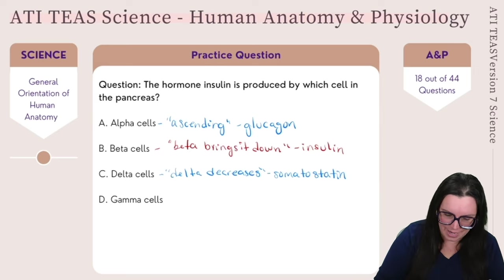Our next question: the filtration unit of a kidney, known as the nephron, does not include which of the following structures? Is it A — Bowman's capsule, B — loop of Henle, C — glomerulus, or D — gallbladder? This is a process of elimination question. Does Bowman's capsule exist within the urinary system? Yes, absolutely. Does the loop of Henle? Yes, it does. We do have the glomerulus inside our kidneys. But the gallbladder is a completely different organ that is not part of our renal system — it's not part of the kidney or the nephron. So by process of elimination, the correct answer is D, gallbladder.